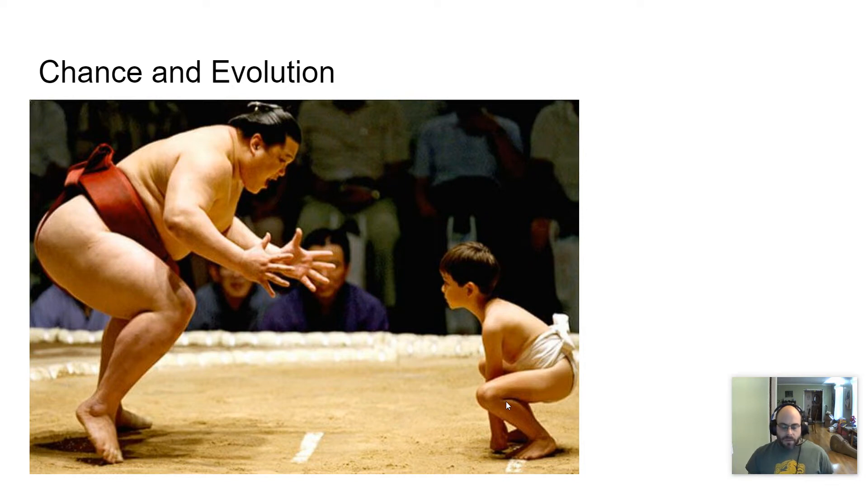There are other things in a population besides mutations that can cause random change that can lead to the change in a population's genetic makeup, which can change that population's course as far as evolutionary history is concerned. So we're going to look at a couple of those.